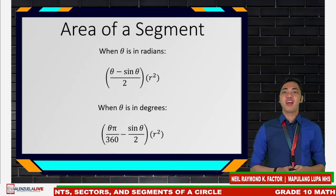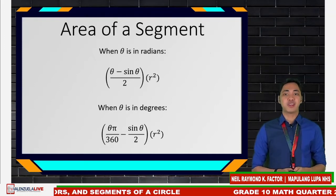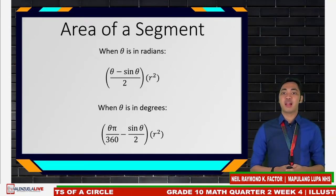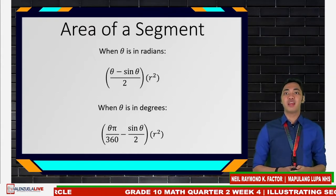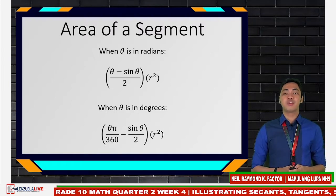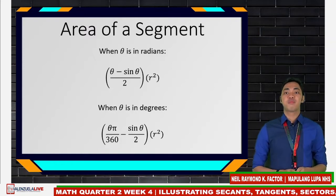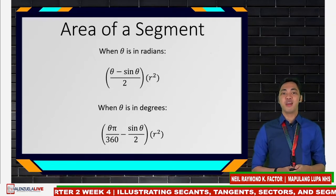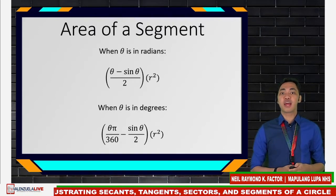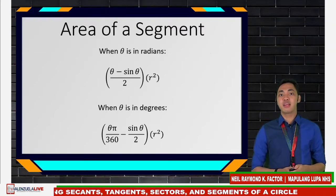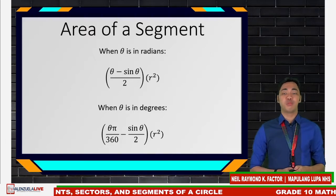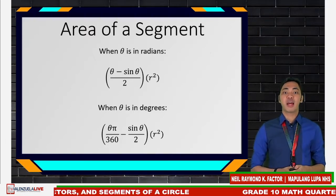Moving on, for the area of the segment, the derivation part would be left to you as an exercise. Our formula is already flashed on the screen. You will be needing your scientific calculator. When theta is in radians, we have: (theta minus sine theta) over 2, times the square of the radius. When theta is in degrees, we have: (theta times pi over 360, minus sine theta over 2) times the square of the radius. If the given is in degrees, make sure your calculator is set to degrees mode; if in radians, set it to radian mode.